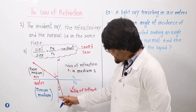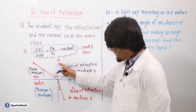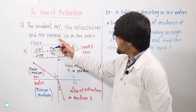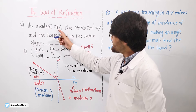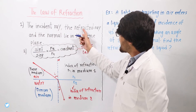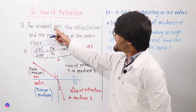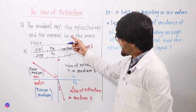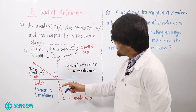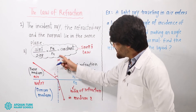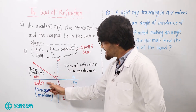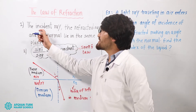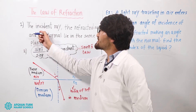And this line is called the normal. So the refracted ray, the incident ray, and the normal line are all in the same plane — the same surface. This is law number one.